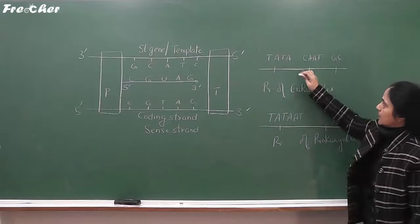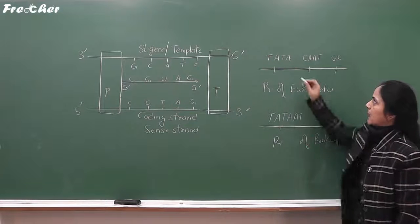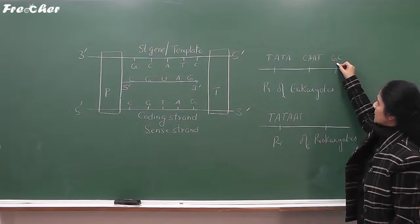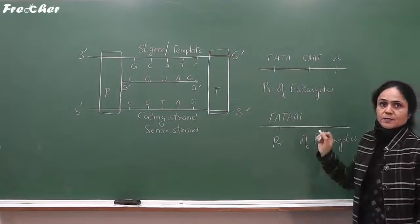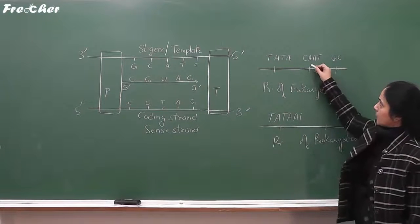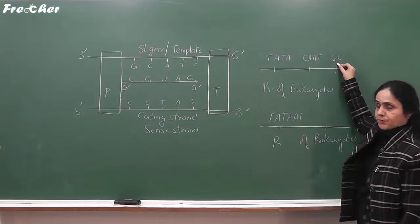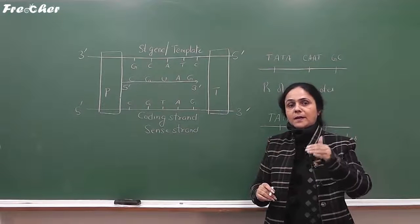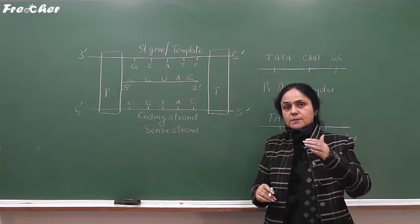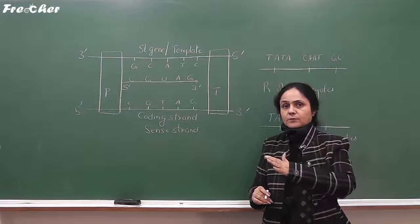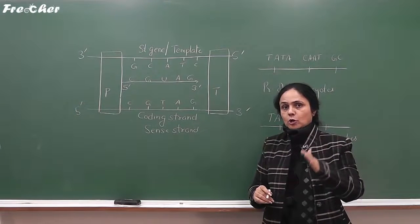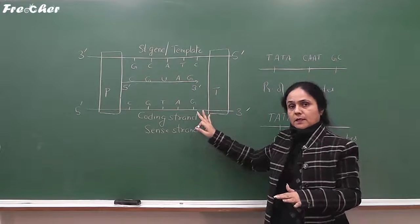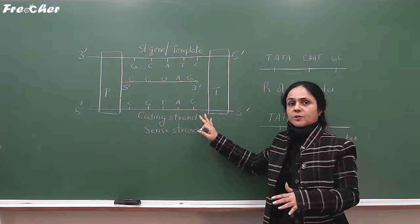In the TATA box of prokaryotes and eukaryotes, RNA polymerase enzyme binds. On the CAAT box and GC box, some additional proteins bind and they enhance transcription — so transcriptional enhancers bind to the CAAT box and GC box. The DNA strand which has the TATA box and the binding site for RNA polymerase is known as the structural gene, also known as the template strand. This concludes the transcription unit, and later we will study how this transcription unit helps in the formation of RNA.